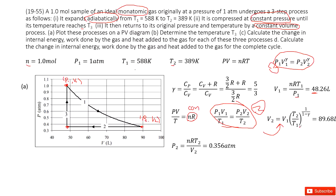Now we have this. The next question is how to get γ. γ is the ratio Cp over Cv. Cp equals Cv plus R over Cv. For monoatomic gas, you can check your textbook — Cv equals 3R/2. Therefore you get γ equal to 5/3. Now in this function, you can input V1, T1, T2, and γ.